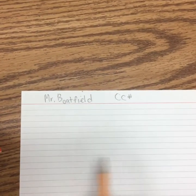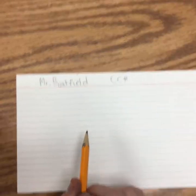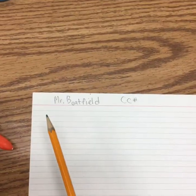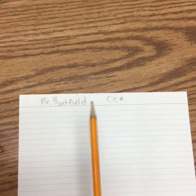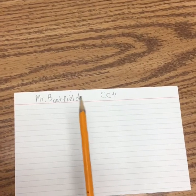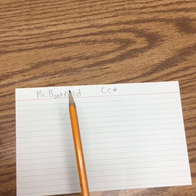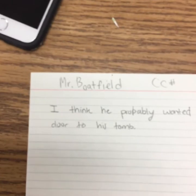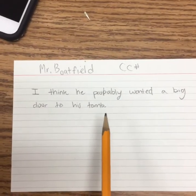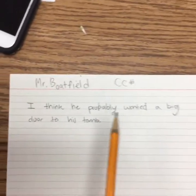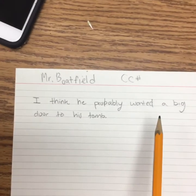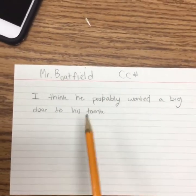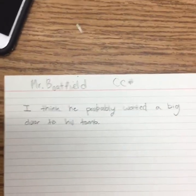I want you to write — it has to be a sentence, doesn't have to be real long — what you think was inside King Tut's tomb. Before you start, talk to a friend: what do you think King Tut put in his tomb? Remember, he died, and before he died he told people what he wanted inside his tomb. What do you think the pharaoh wanted to have when he went to the afterlife? Here's what I put: I think he probably wanted a big door to his tomb, because if I am the pharaoh ruling over my kingdom and I die, I don't want people entering my tomb — I want to keep it safe and private.